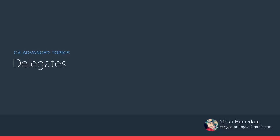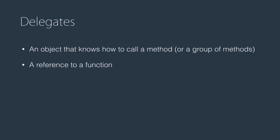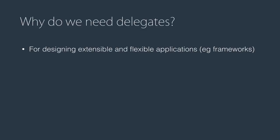A delegate is an object that knows how to call a method or a group of methods. A simpler way to define that is a delegate is a reference or a pointer to a function. Why do we need something like that? We can call methods directly — why do we need a delegate responsible for calling methods for us? Well, this technique allows us to create applications that are extensible and flexible, and often this is used in designing frameworks.